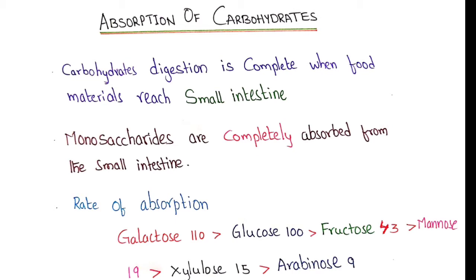The rate of absorption of these monosaccharides varies. For example, galactose has a rate of absorption of 110, followed by glucose with a rate of 100. Monosaccharides with the least rate of absorption are arabinose and xylose. This difference in the rate of absorption is due to the mechanism by which they are absorbed. Galactose and glucose are absorbed by active transport, whereas the remaining sugars with low rates are absorbed by simple diffusion.